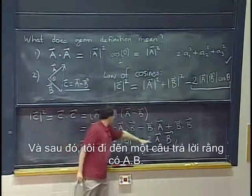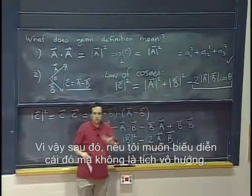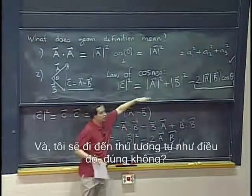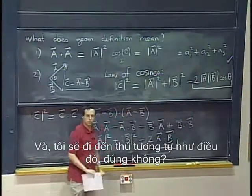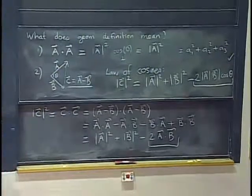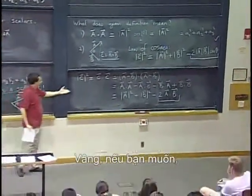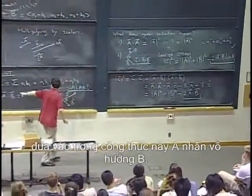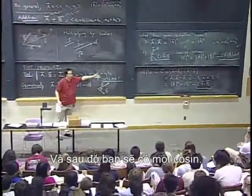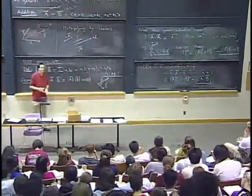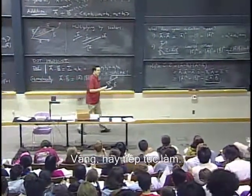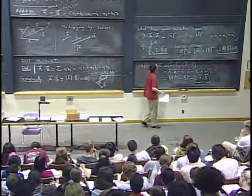And then I get to an answer that has an a dot b. So then if I wanted to express that without a dot product, then I would have to introduce a cosine and I would get the same as there. OK, so yeah, if you want the next step to recover the law of cosines would be to plug in this formula for a dot b and then you would have a cosine. OK, let's keep going.